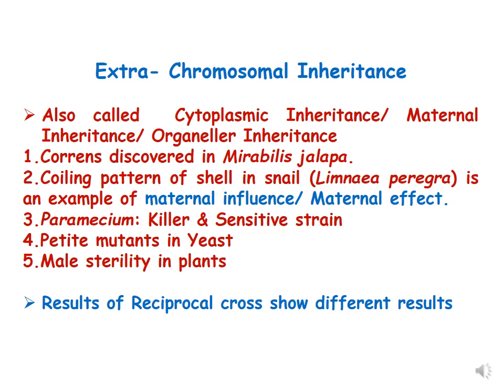The first example of extrachromosomal inheritance was discovered in Mirabilis Jalapa. Other examples include the coiling pattern of shell in snail, that is Limnea peregra, which is an example of maternal influence or maternal effect. Maternal effect is different from cytoplasmic inheritance. We will also discuss paramecium, which has two strains — killer and sensitive — and petite mutants in yeast, and briefly male sterility in plants.